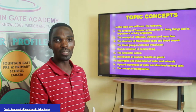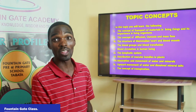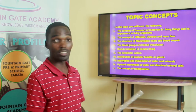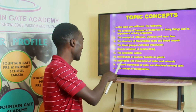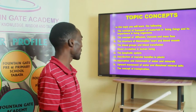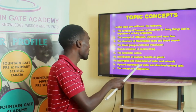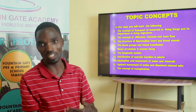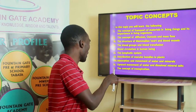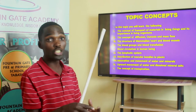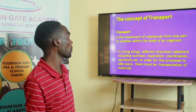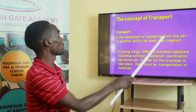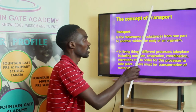How does water get transported from the roots to the upper parts of the plant? Does it have a pump? We shall also cover the upward movement of water and dissolved minerals in plants. At the end we shall discuss the concept of transpiration. Now let us start with concept number one — the concept of transport.